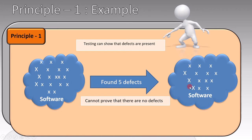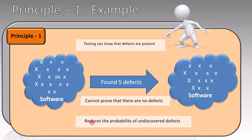We found 5 out of 20 defects, but there are 15 defects left that we don't know about. So we cannot prove that there are no defects in the software. And finally, testing reduces the probability of undiscovered defects. How does that happen? Initially, we had 20 defects, but we found 5.